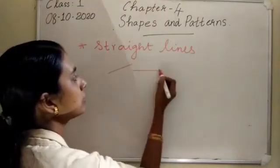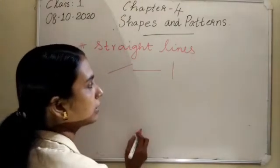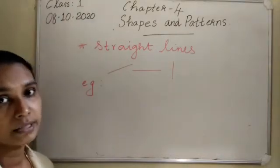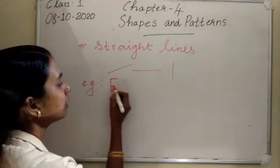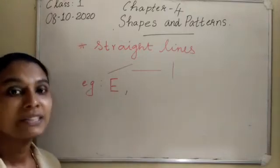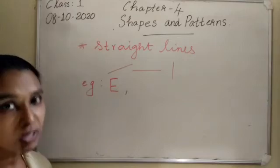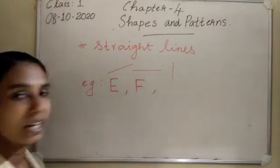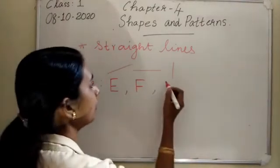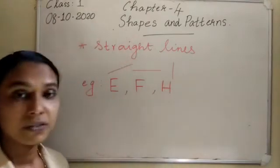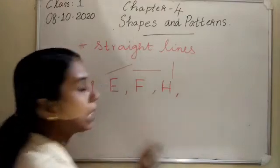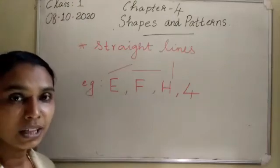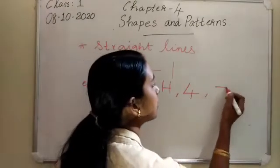This is a straight line. Some examples - some letters are made using straight lines. What about E? E is made up of straight lines. What about F? F is made up of straight lines. Then what about H? H is made up of straight lines. Then some numbers - number 4 is made only using straight lines.